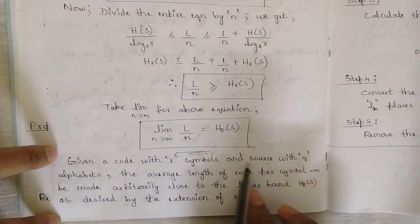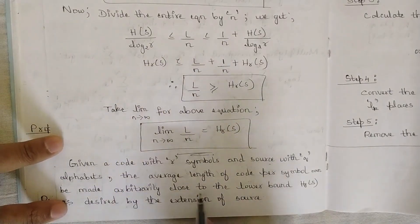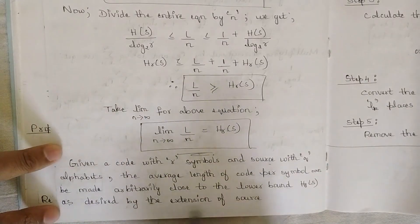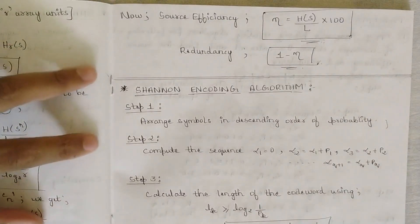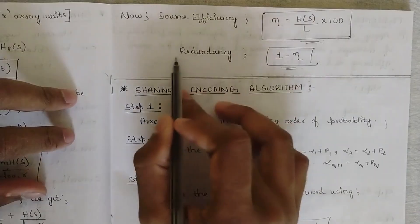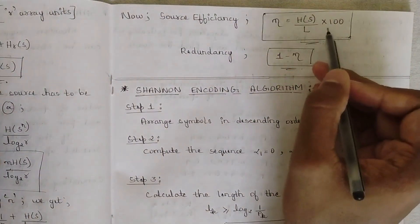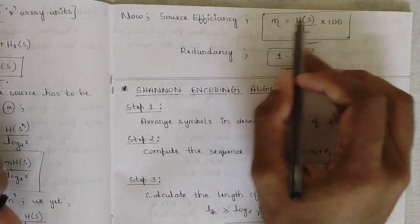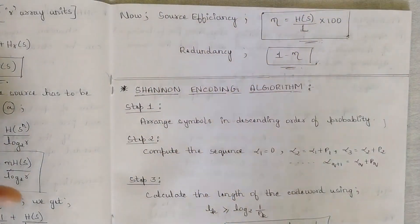Given a code with R symbols and a source with Q alphabets, the average length of code per symbol can be made arbitrarily close to the lower bound H(S) as desired by source extension. Based on Shannon's theorem, two more terms are defined: source efficiency and redundancy. Source efficiency η = H(S)/L × 100, and redundancy = 1 − η.